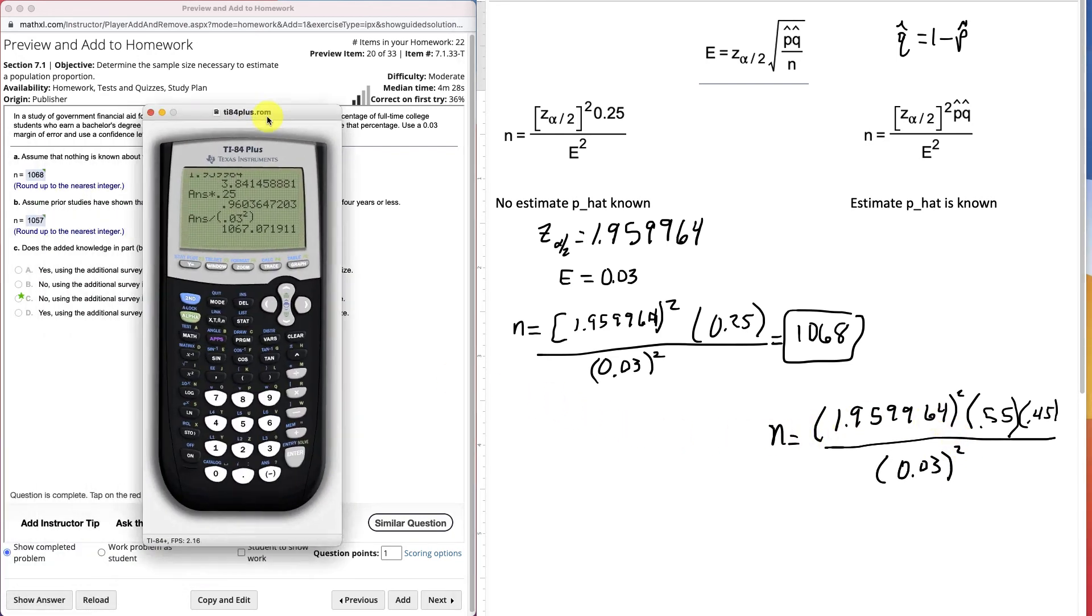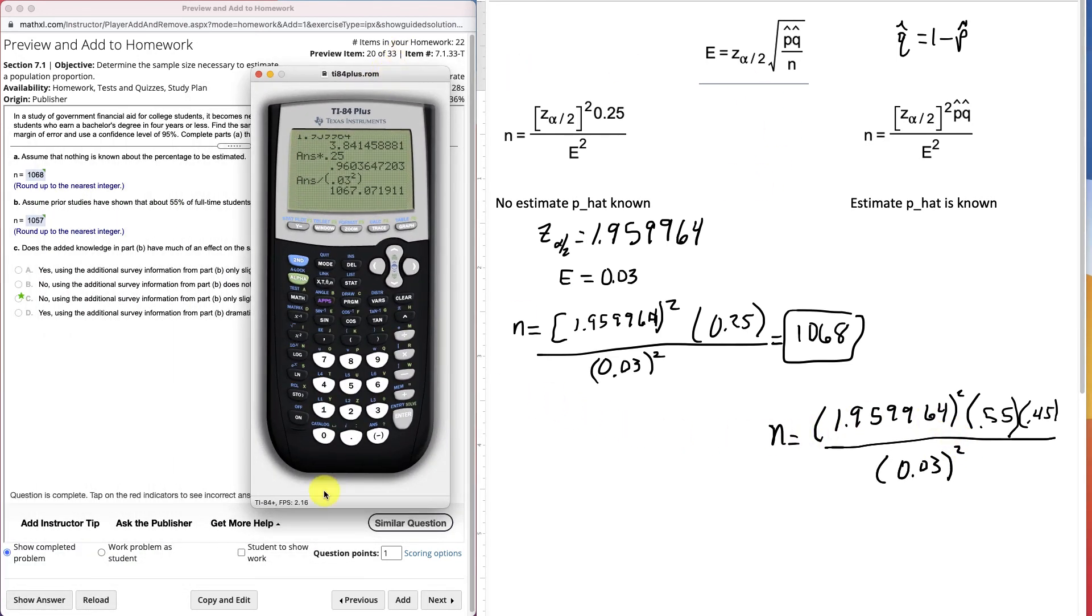Let's put that in the calculator. I've got my 1.959964 to the second power times .55 times .45. Of course I'm doing this the long way. If you can put it in correctly, you can put it all in at one time. But I'm just doing it piece by piece, so I know I'm calculating the numerator there. Now I'm calculating the denominator.